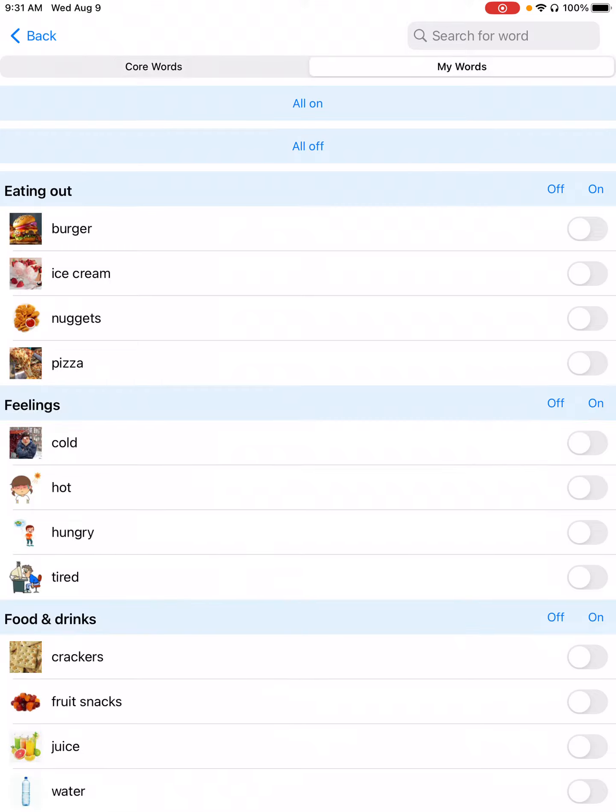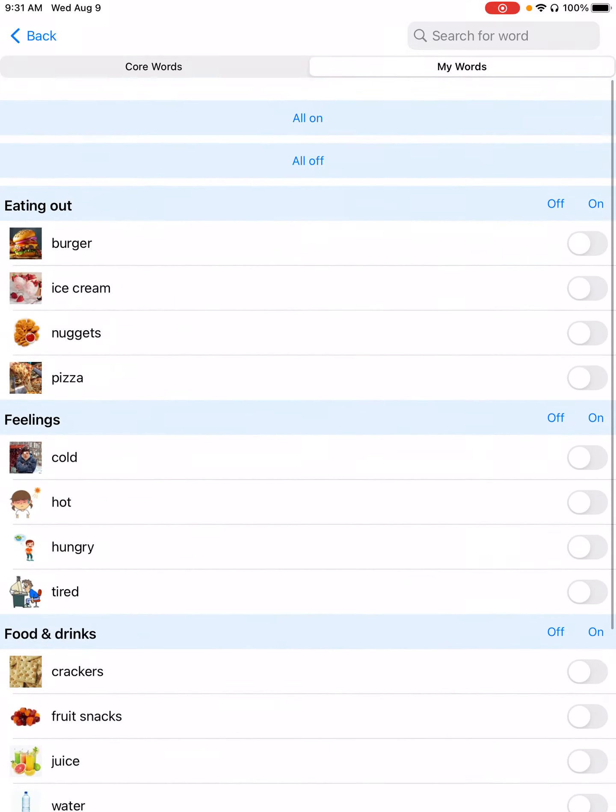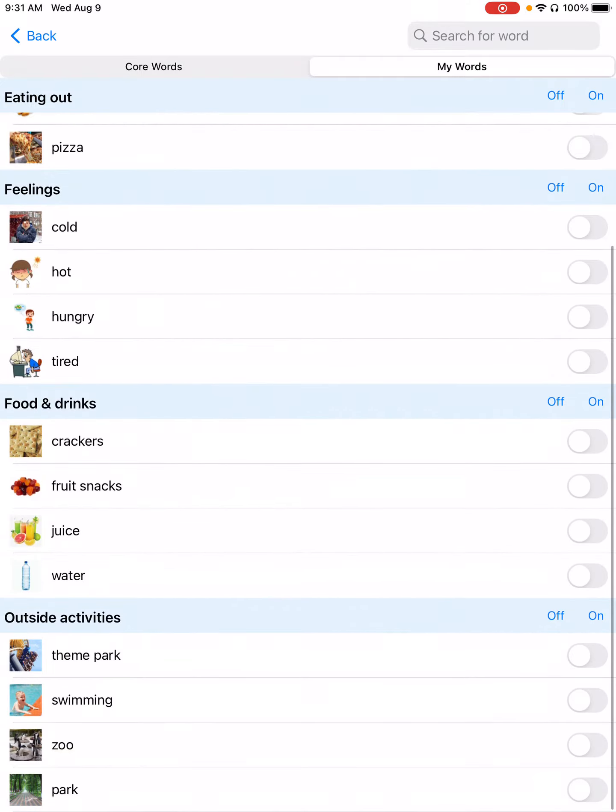Now let's switch over to my words. You'll see all of the words you've added to visual choices so far. There's eating out, feelings, food and drinks, etc.